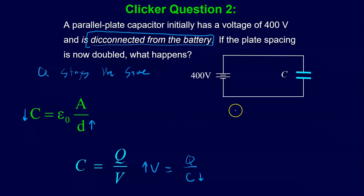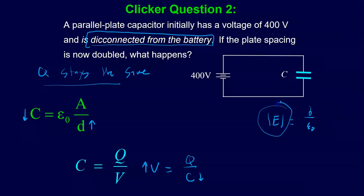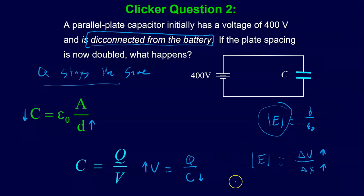Another way to think about it: the electric field inside a capacitor is sigma over epsilon-naught. Since charge stays the same, the electric field inside has to stay the same too. From the equation electric field = delta V over delta X, if this stays constant and delta X increases, delta V must increase by the same amount to keep the electric field the same. So there are two alternate ways to think about it - you can pick which one you prefer.